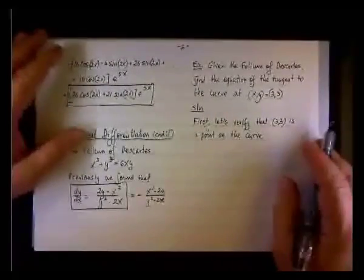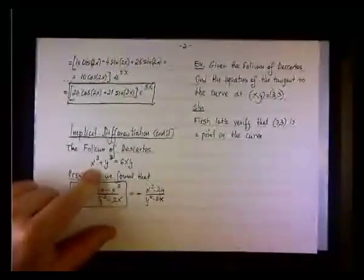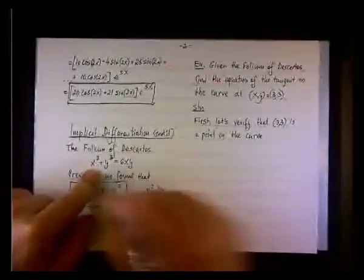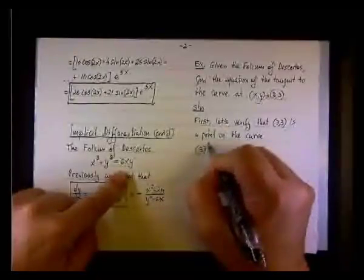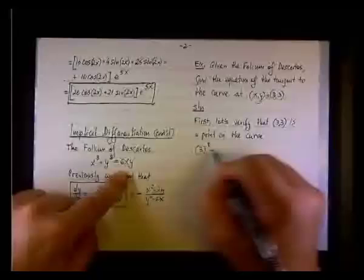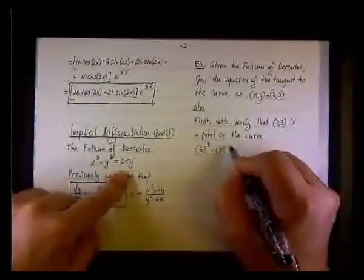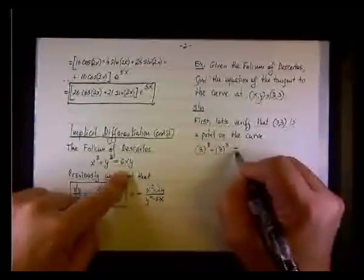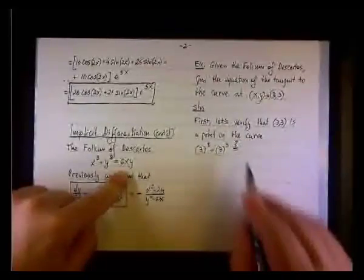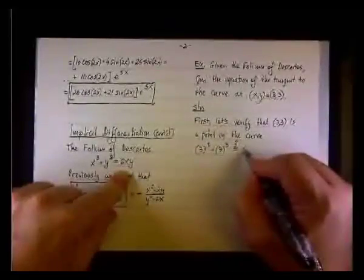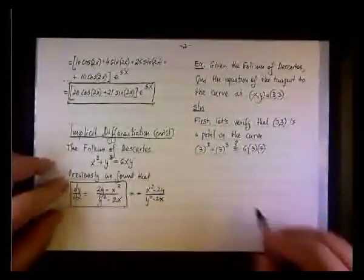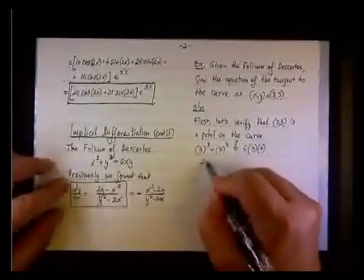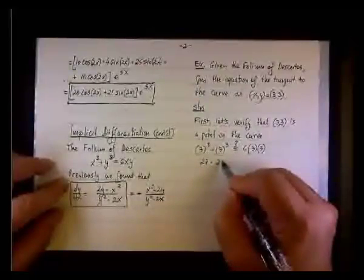Okay? So what we do, since the equation is not given to us explicitly, we need to check that the left side is equal to the right side. So we do 3 cubed for x plus 3 cubed for y. We want to check, with the question mark above the equal sign, whether it will be 6 times 3 times 3. Right? So here we have 27 and 27, or a total of 54.